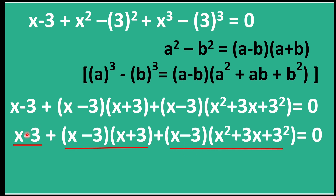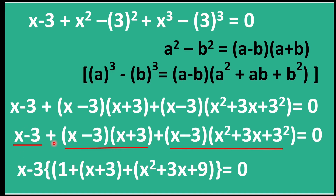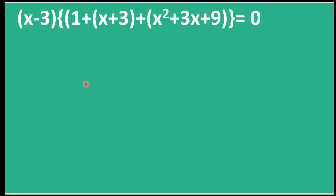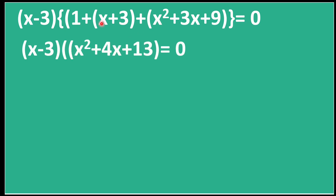In all three terms we have (x − 3) in common. So we take (x − 3) as a common factor. After factoring, the remaining terms are: 1, plus (x + 3), plus (x² + 3x + 9), all equal to 0. Opening the brackets and combining like terms: x² + (x + 3x) + (1 + 3 + 9) = x² + 4x + 13. So we get (x − 3)(x² + 4x + 13) = 0.